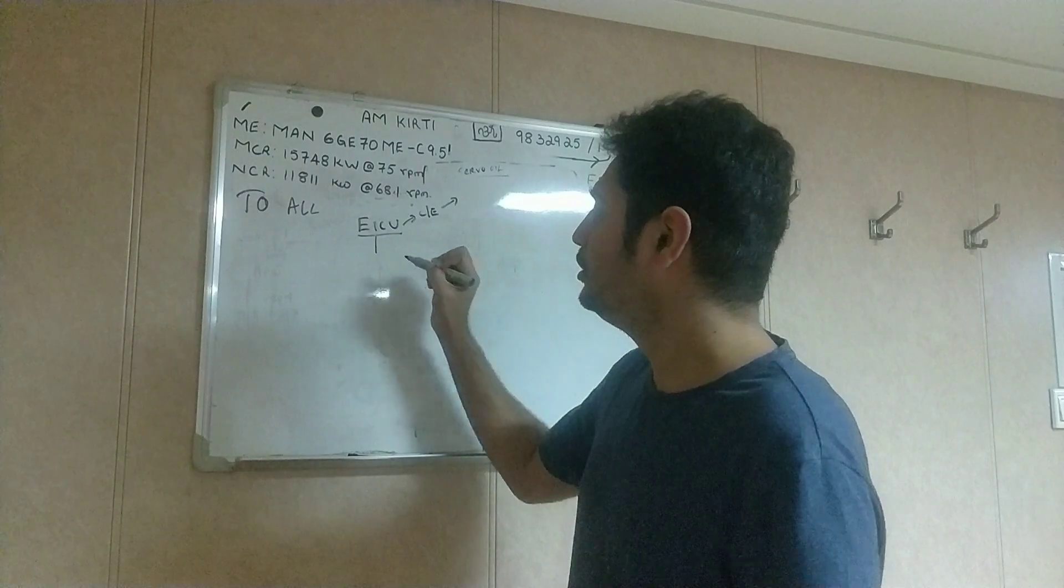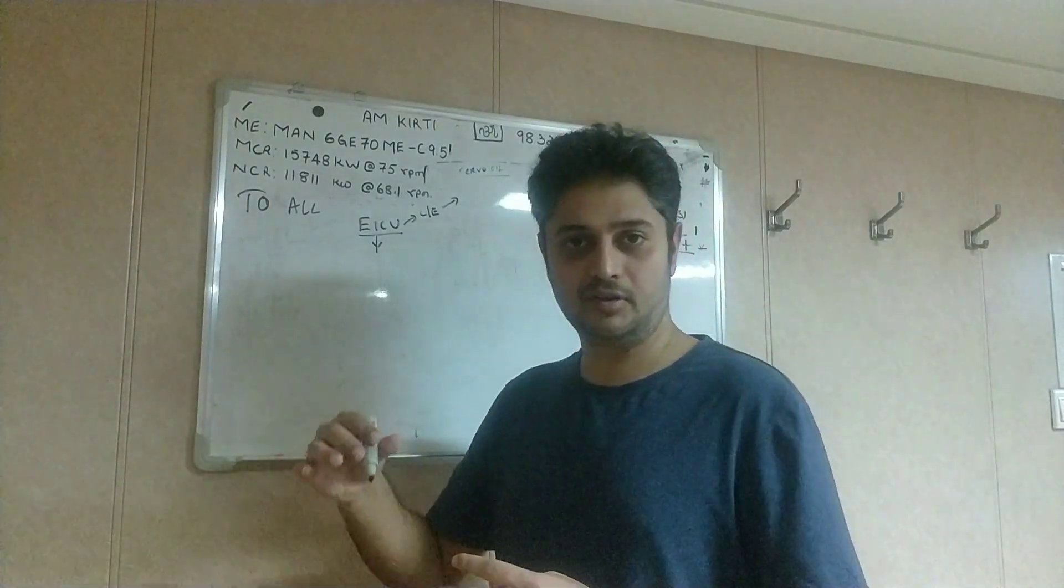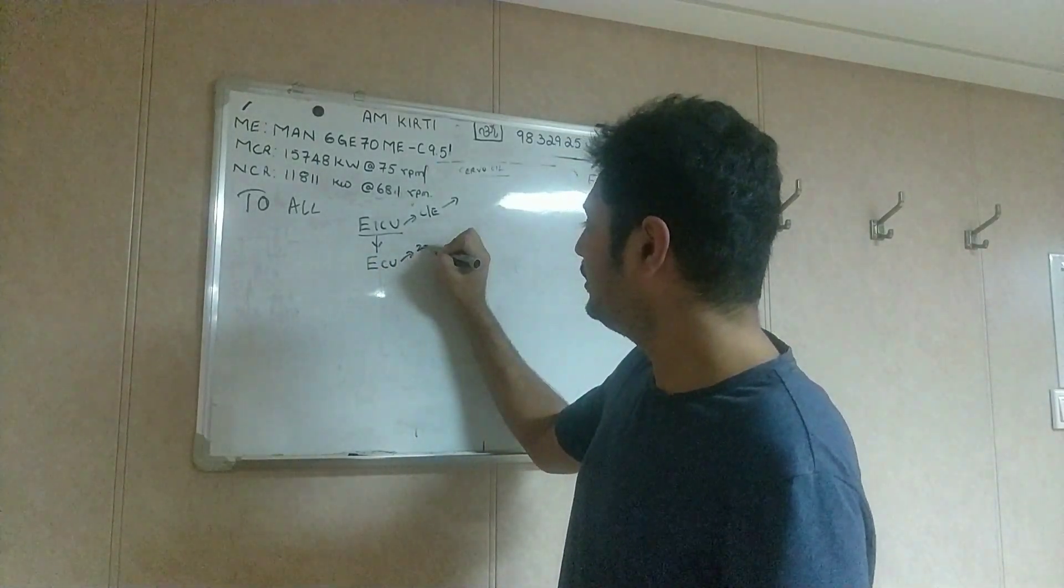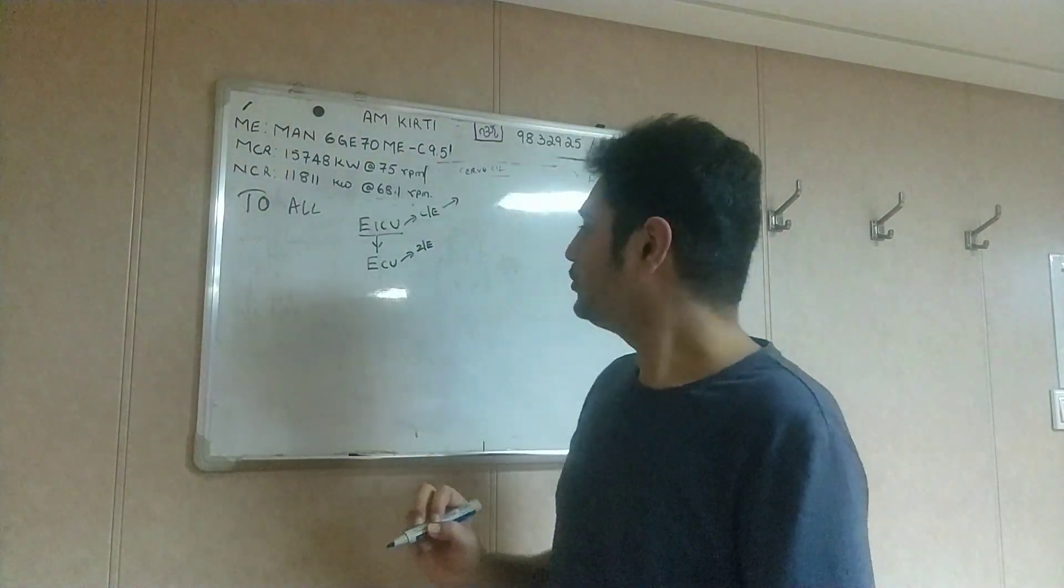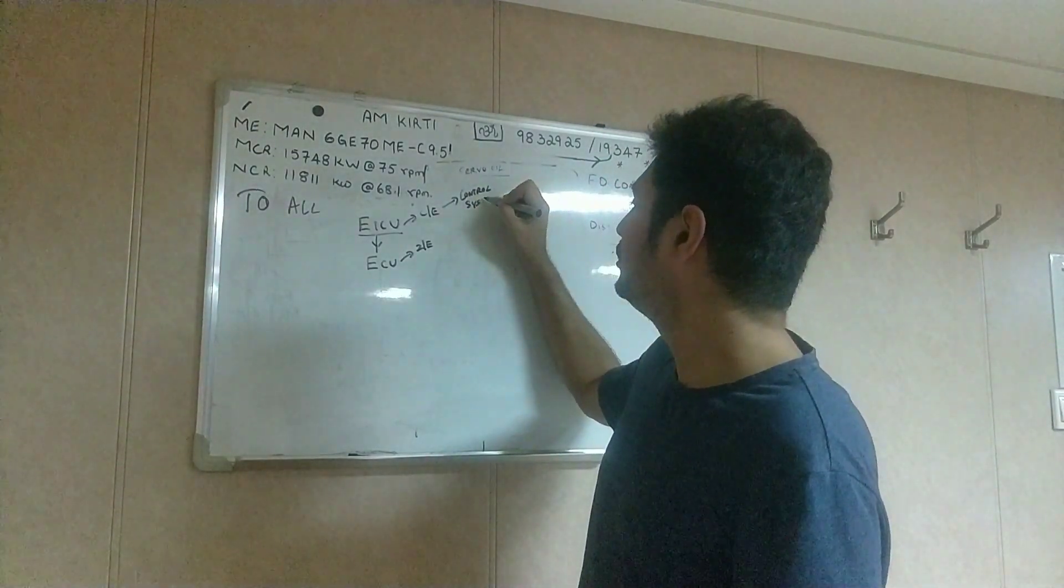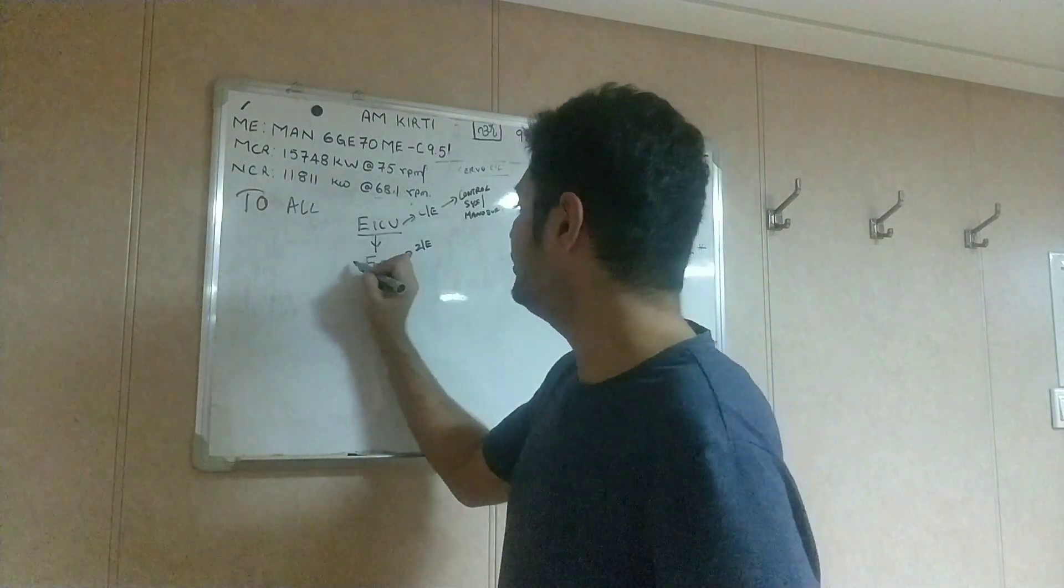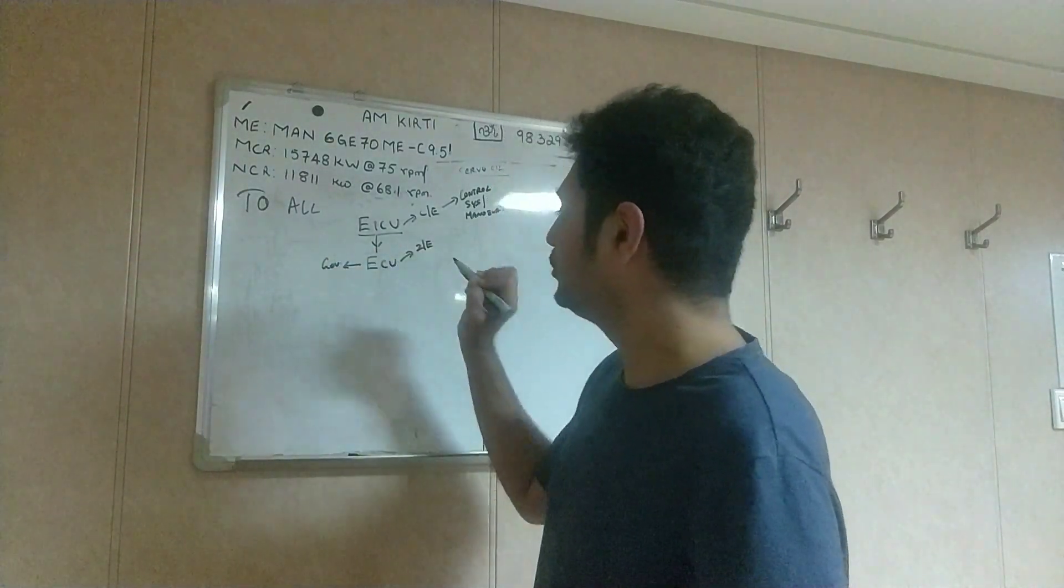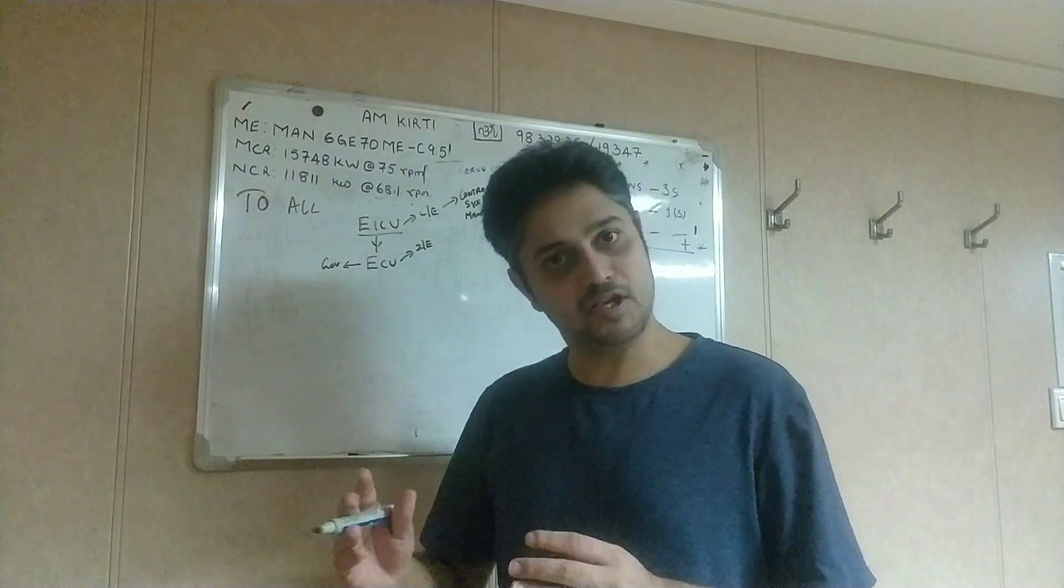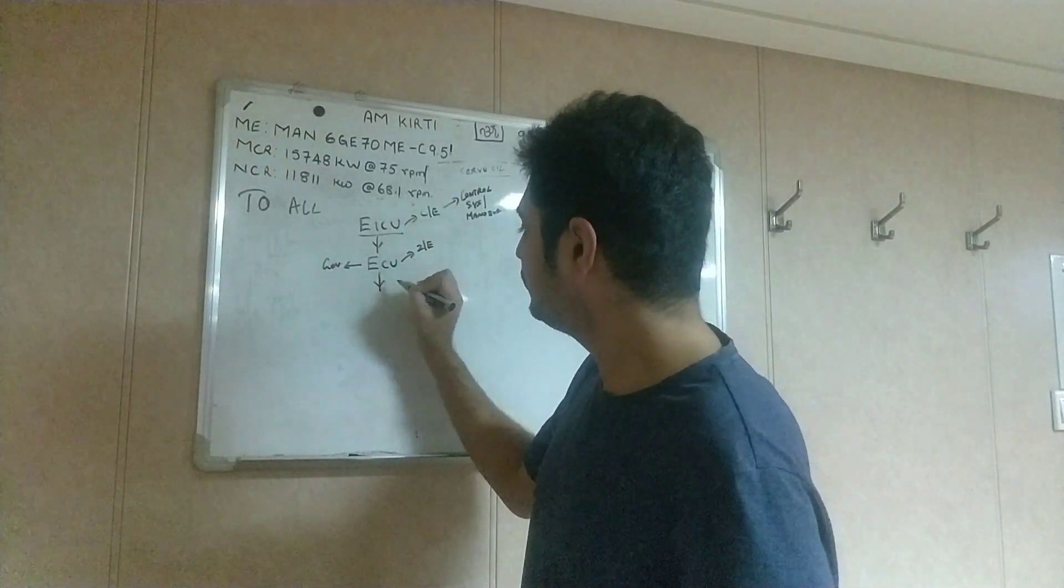Rank wise if you understand, I hope you will remember. So EICU acts as a chief engineer. This is what chief engineer basically does - gives, tells to second engineer this is what is the thing which we need to do. So accordingly it will give signal to ECU which acts as a second engineer. This you can imagine control systems. This is maneuvering and all - maneuvering controls, safeties. This acts as a governor. Basically what second engineer does, he is a team leader who is in charge of executing the jobs in the engine room.